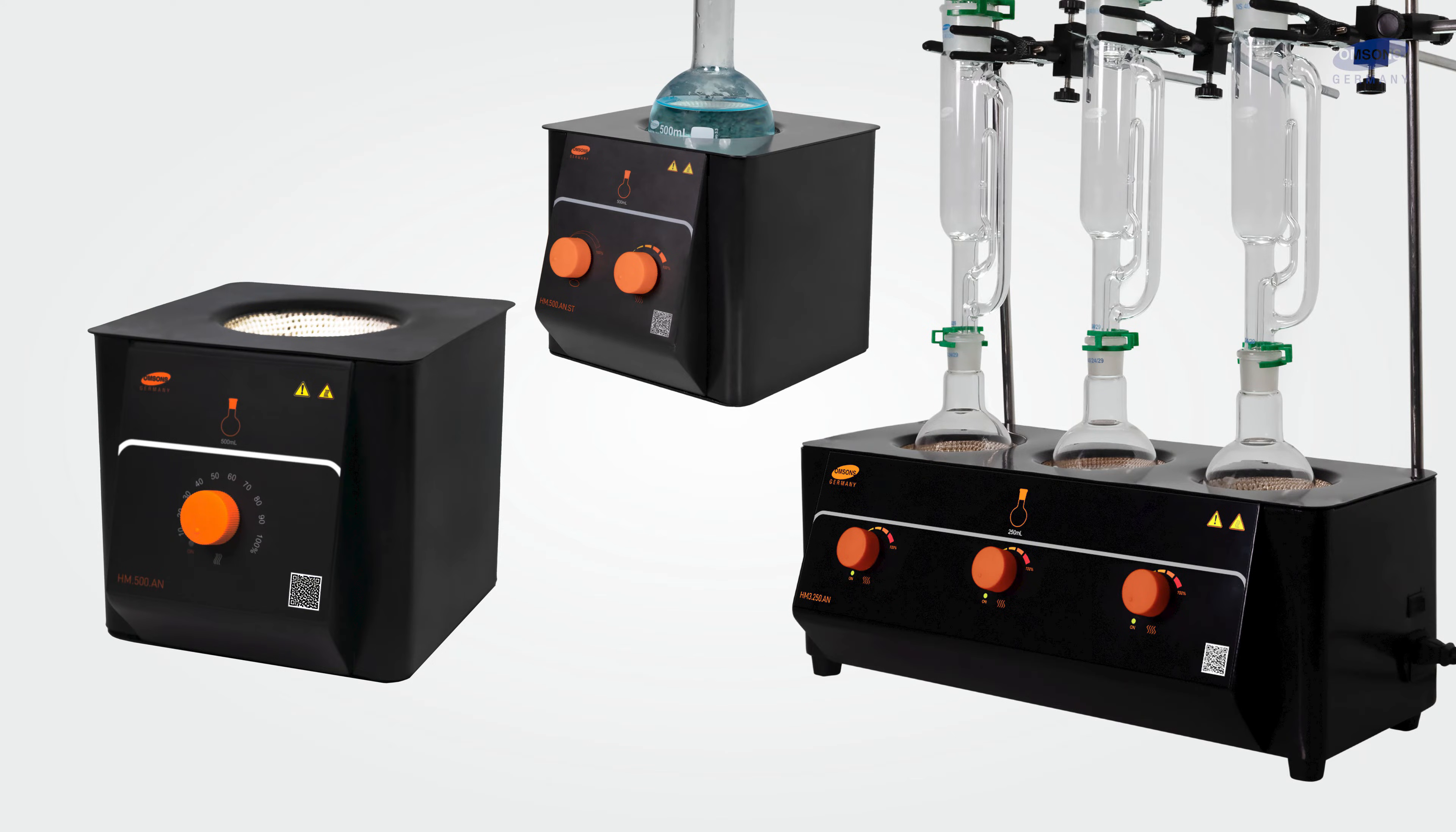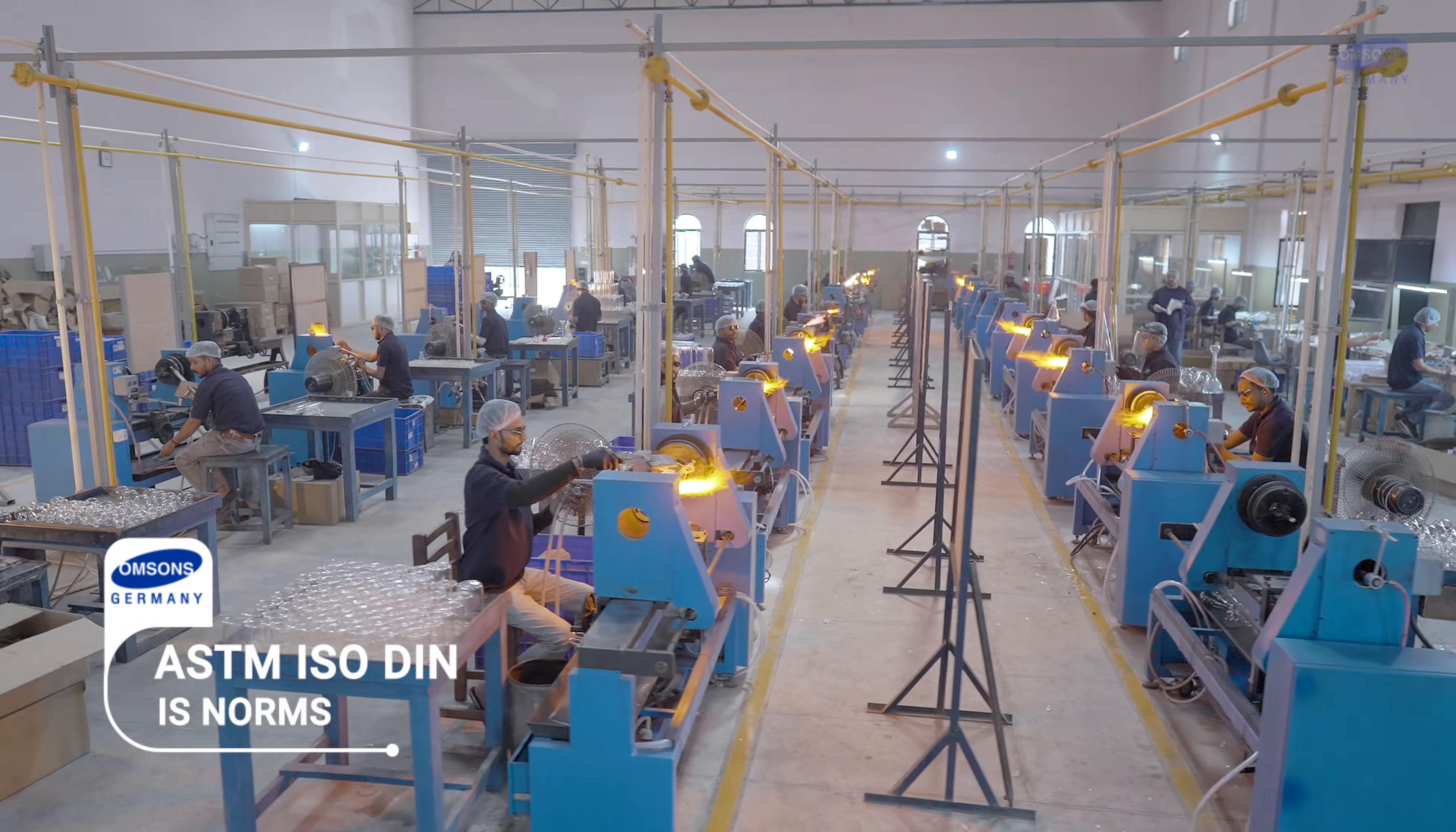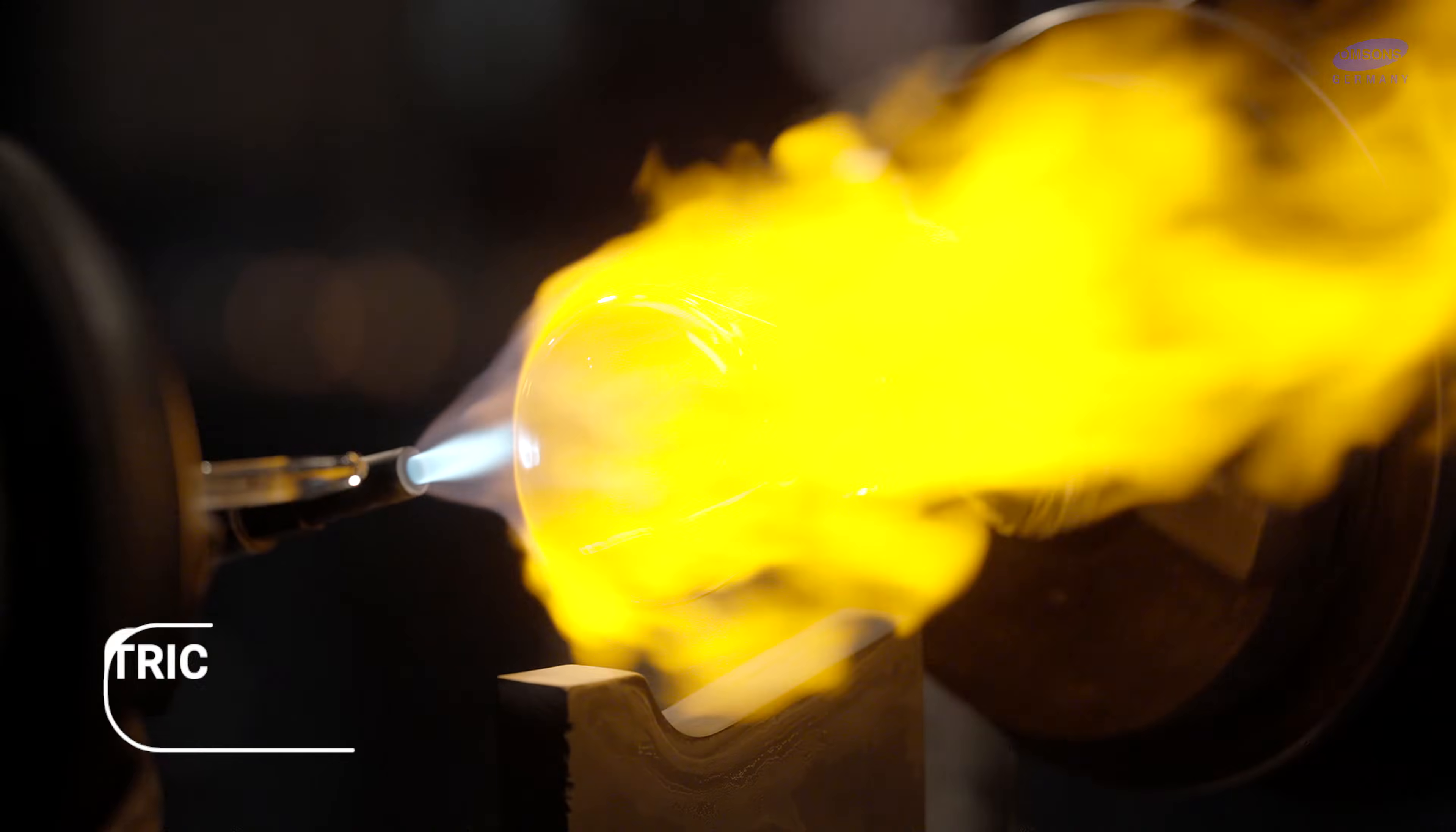Machines used in manufacturing: All of the Omson's products are manufactured under ASTM, ISO, DIN, and IS norms. Our manufacturing is carried out by more than 80 highly skilled, qualified, and experienced glass blowers consistently working on German origin automatic and semi-automatic machines for unhindered production of precision volumetric glassware.